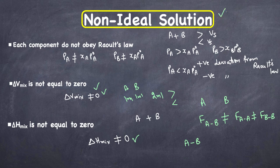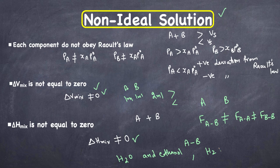Two commonly used examples of non-ideal solutions are water and ethanol, and sulfuric acid (H₂SO₄) and water (H₂O).